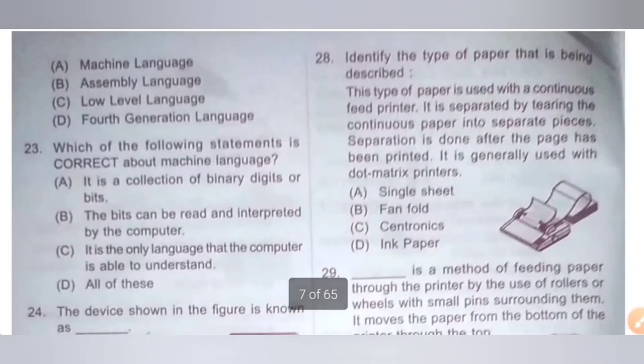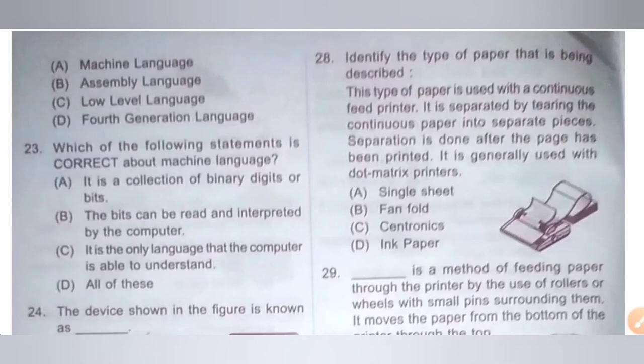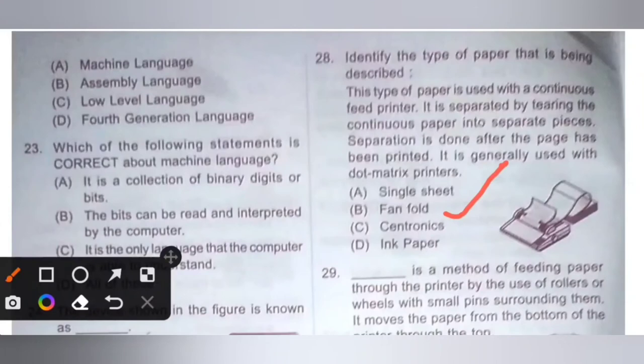Question 28: Identify the type of paper being described. This type of paper is used with a continuous feed printer. It is separated by tearing the continuous paper into separate pieces after the page has been printed. It is generally used with a dot matrix printer. Options: A. Single sheet, B. Fan fold, C. Centronics, D. Ink paper. The correct option is fan fold — Option B.